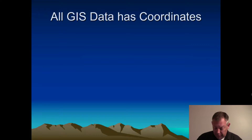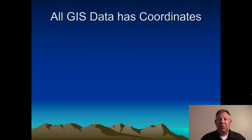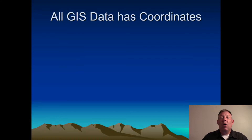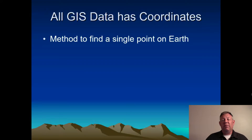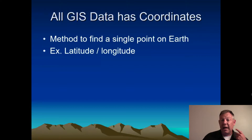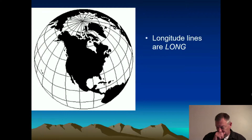All GIS data is geo-referenced, meaning it all has coordinates associated with it, because the software needs to know where to put that data on the planet. We're going to have several different kinds of data and we need them to line up, so we need to know where they are on the planet. In an upcoming lecture we'll talk specifically about different coordinate systems — it's very important that you understand how these work. For now, just realize everything has coordinates. You're probably familiar with latitude and longitude: longitude lines run from the North Pole to the South Pole, and latitude lines run parallel to the equator.